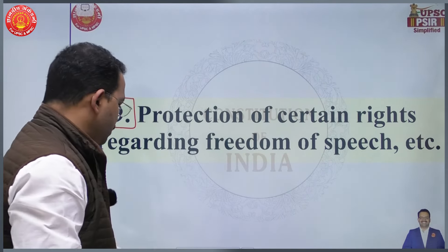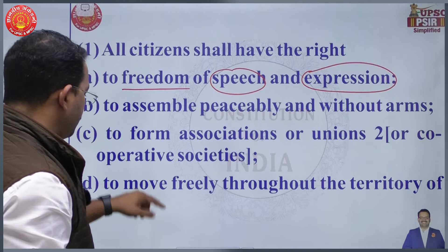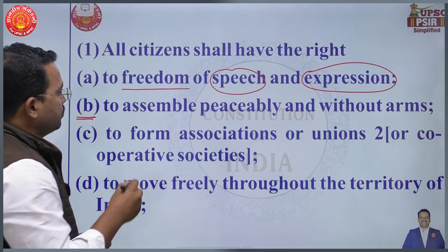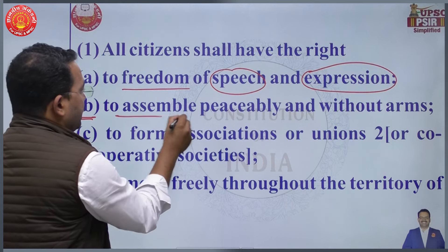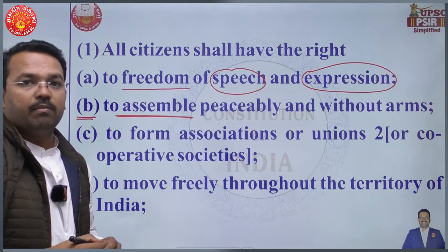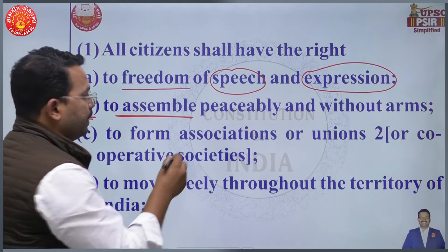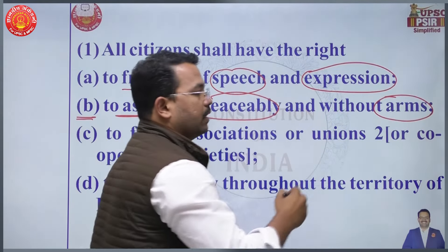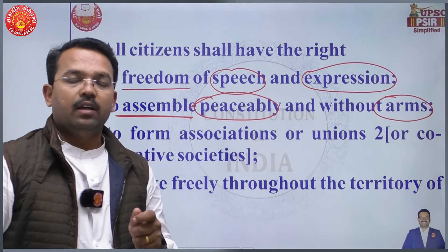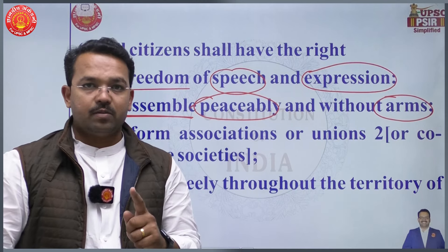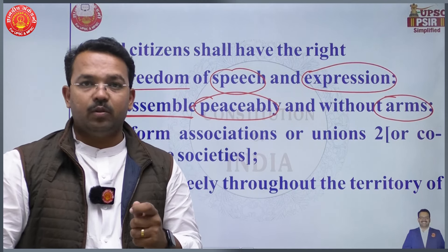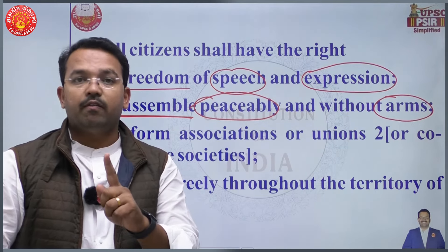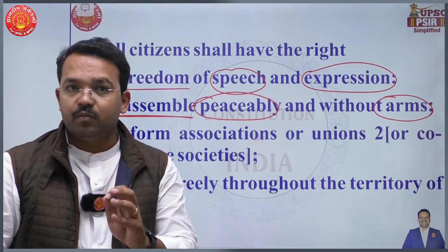The second clause is freedom to assemble — that is, the right to assemble. But this assembly should be peaceful and without arms. Article 19, clause B: freedom to assemble, peaceful, without arms in your hand.